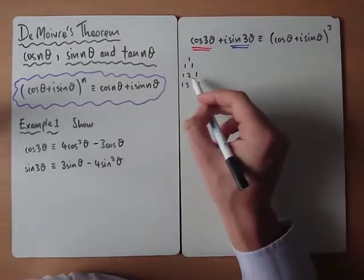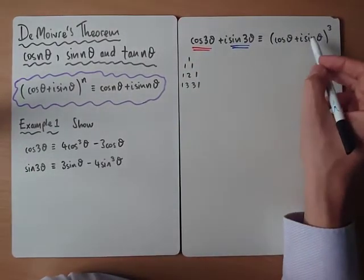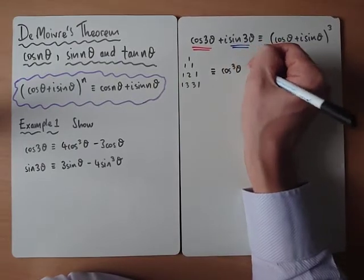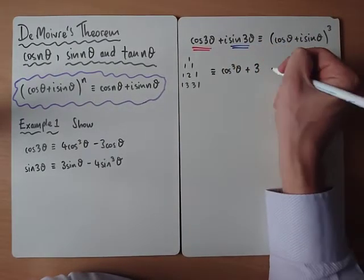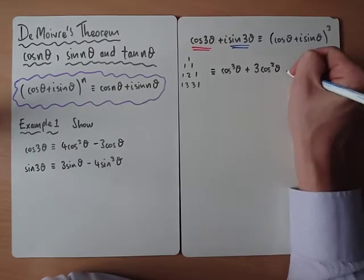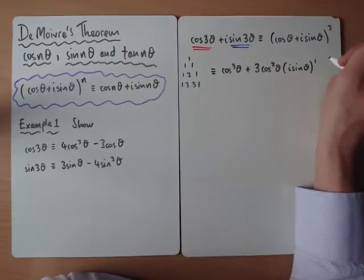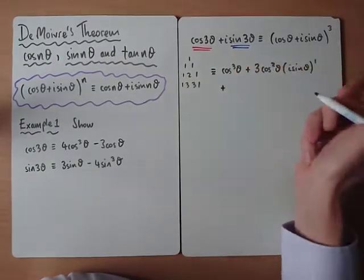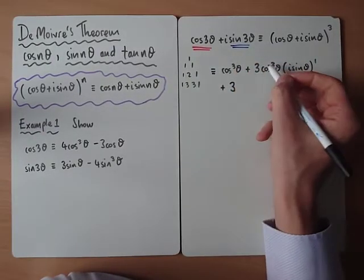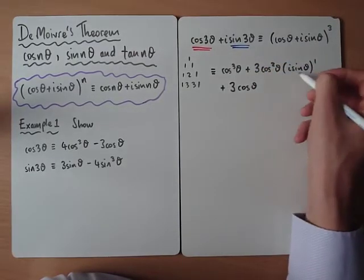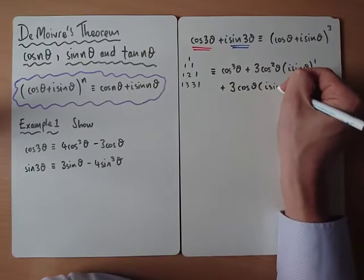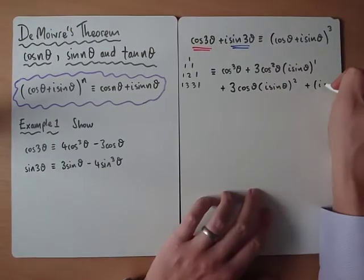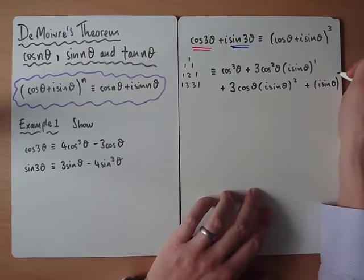Using Pascal's triangle for the coefficients — 1, 3, 3, 1 — when expanding the bracket cubed, we get: cos³θ + 3cos²θ(i sinθ) + 3cosθ(i sinθ)² + (i sinθ)³.